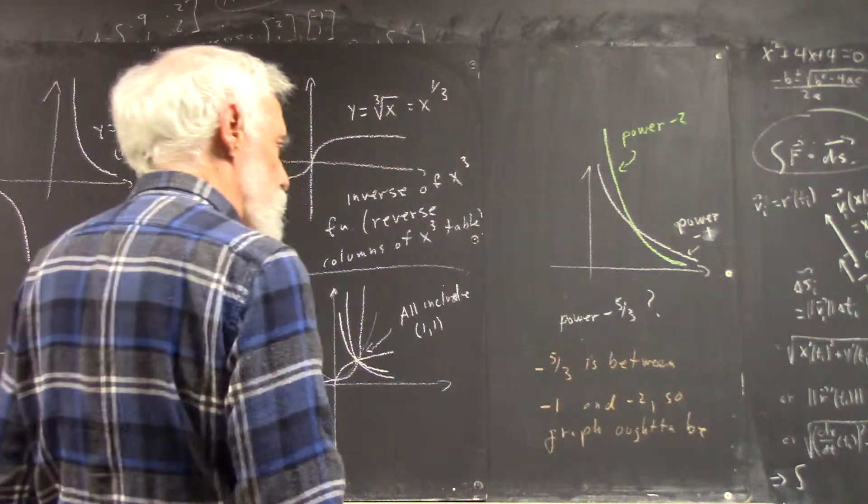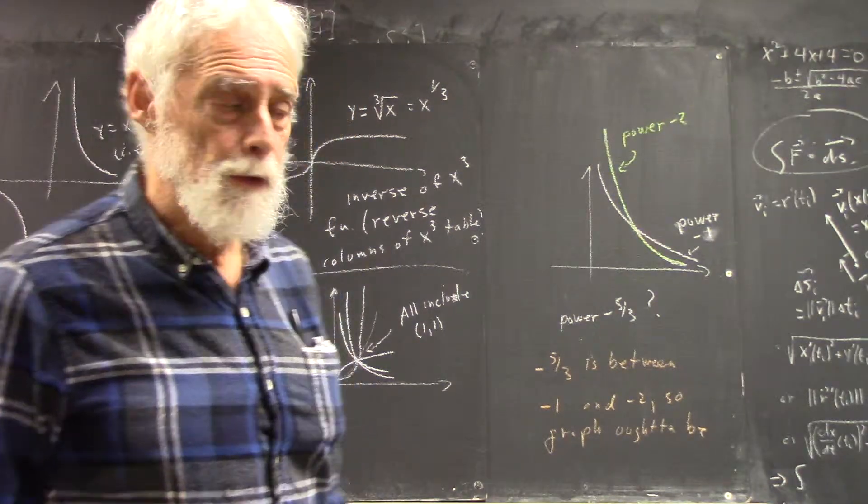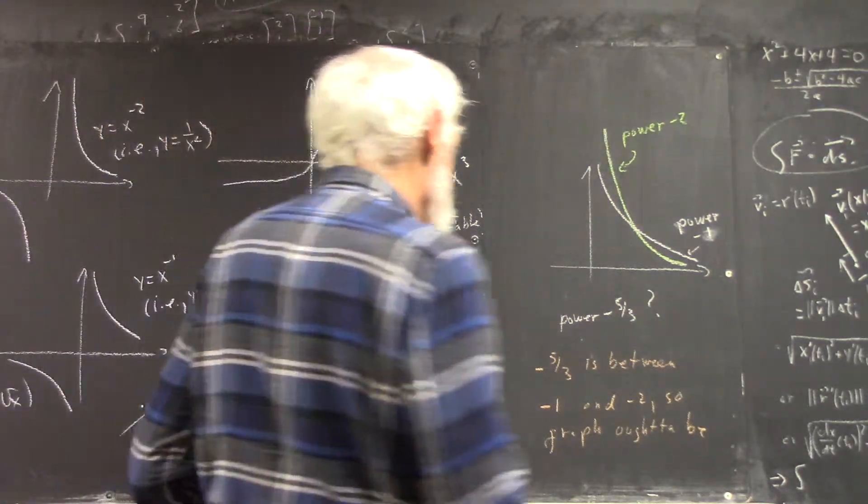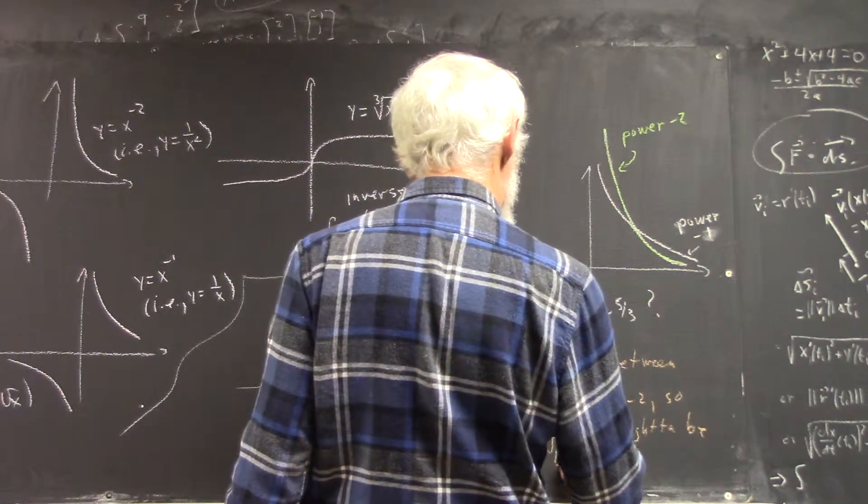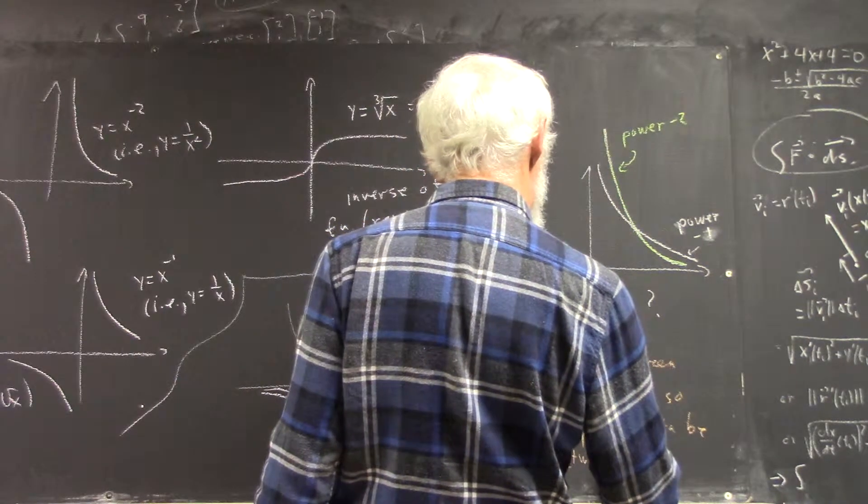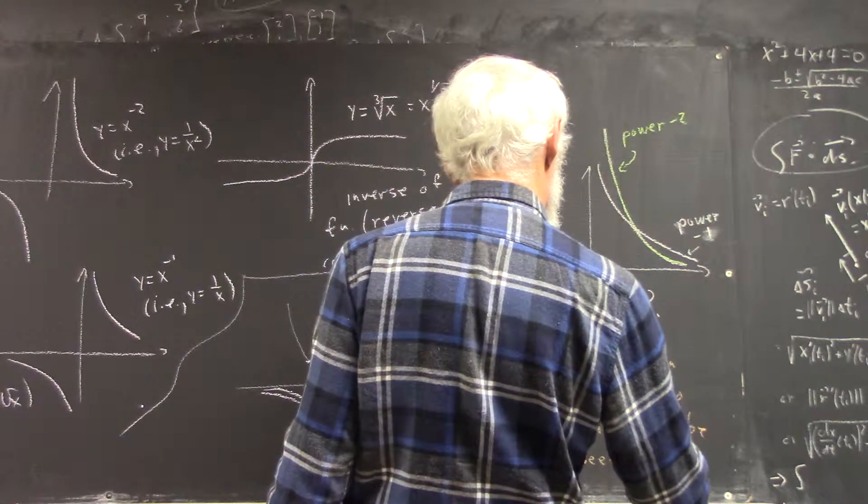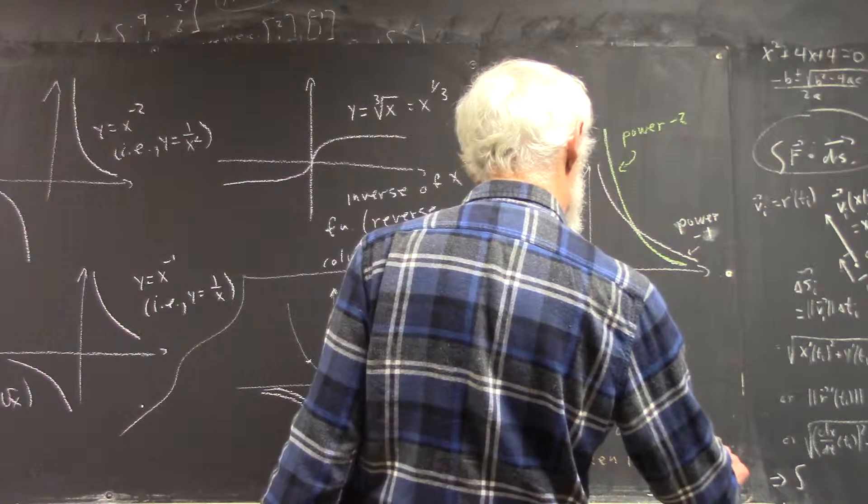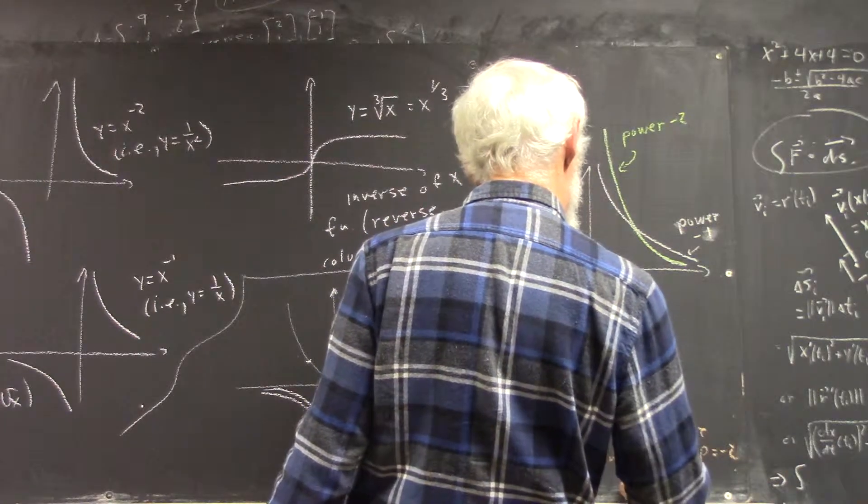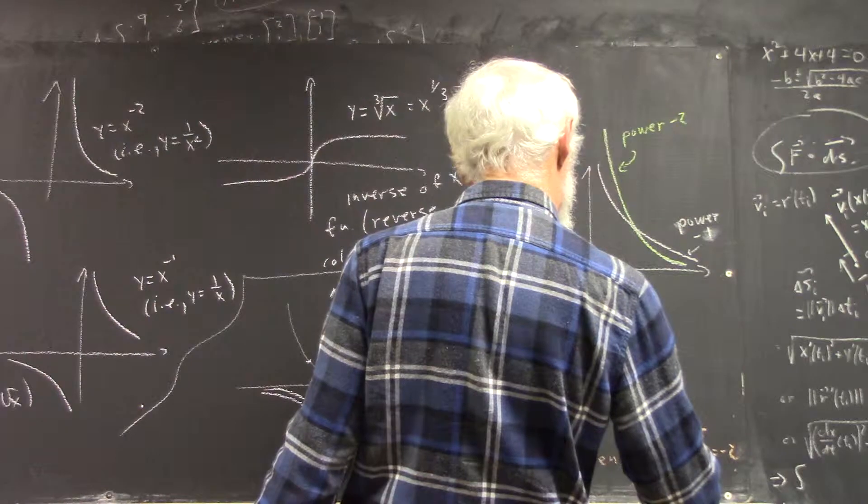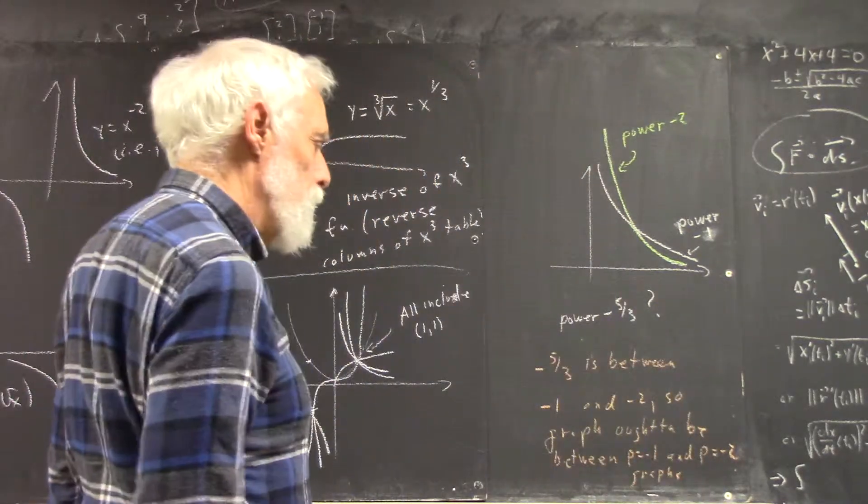Okay, five-thirds is between negative one and negative two, so the graph ought to be between those two graphs.